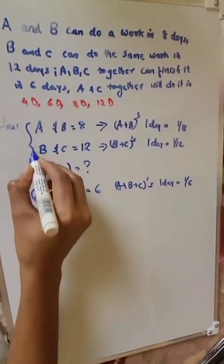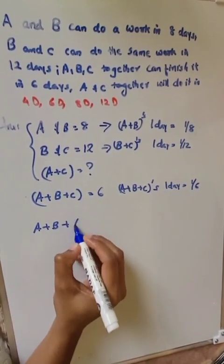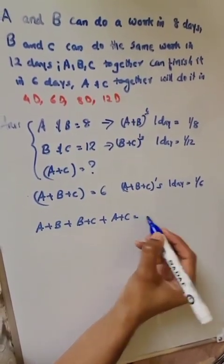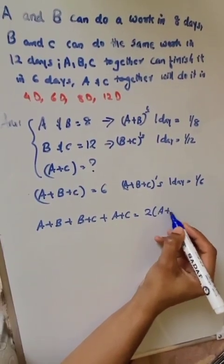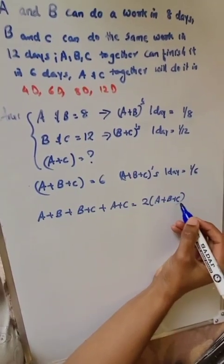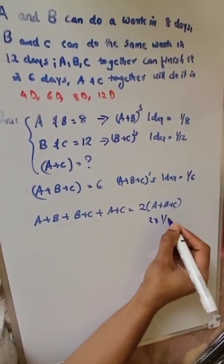We can just add up: A and B plus B and C plus A and C. We get 2 into A plus B plus C. So we know A, B, C's one day work, that is 2 into 1 by 6.